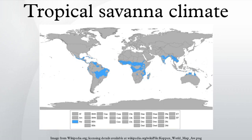Tropical savannah climates have monthly mean temperatures above 18 degrees Celsius in every month of the year and typically a pronounced dry season, with the driest month having precipitation less than 60 millimeters. This is in direct contrast to a tropical monsoon climate, whose driest month sees less than 60 millimeters of precipitation but has more rainfall overall.